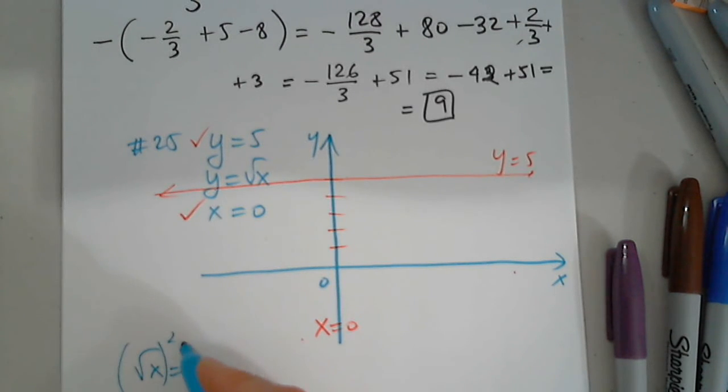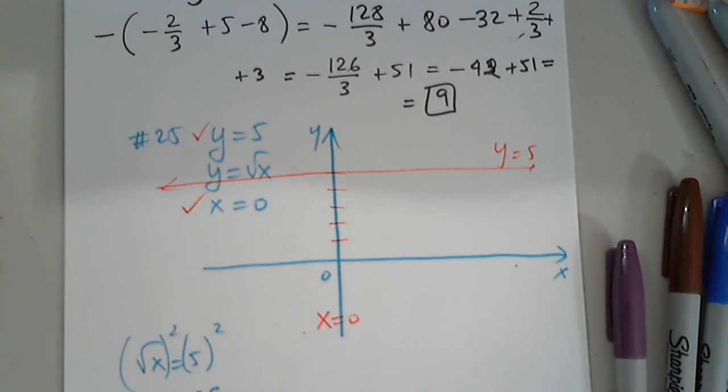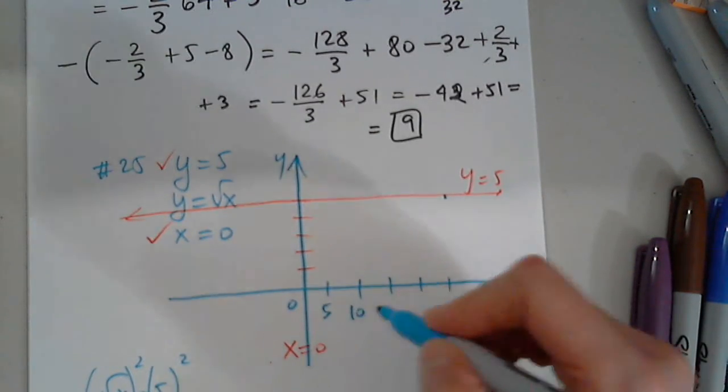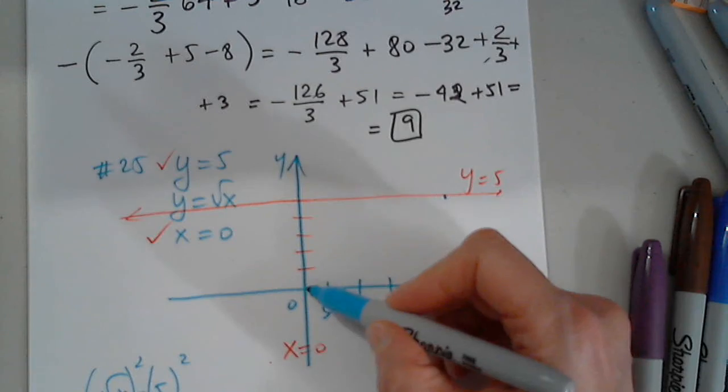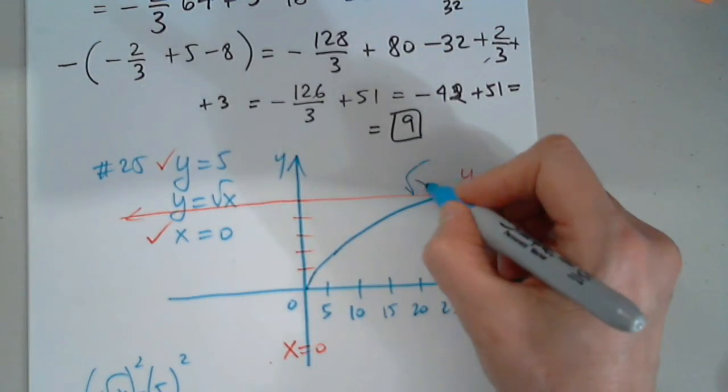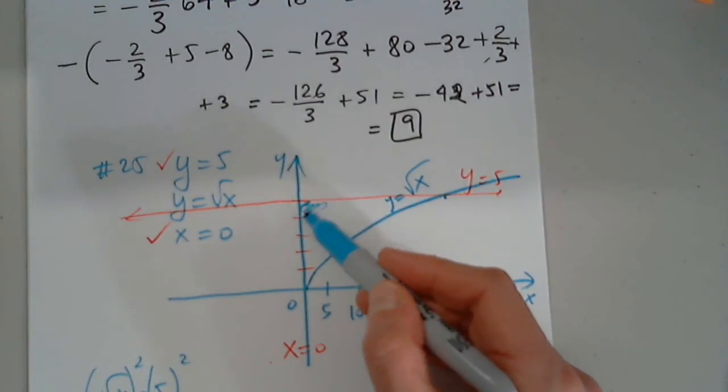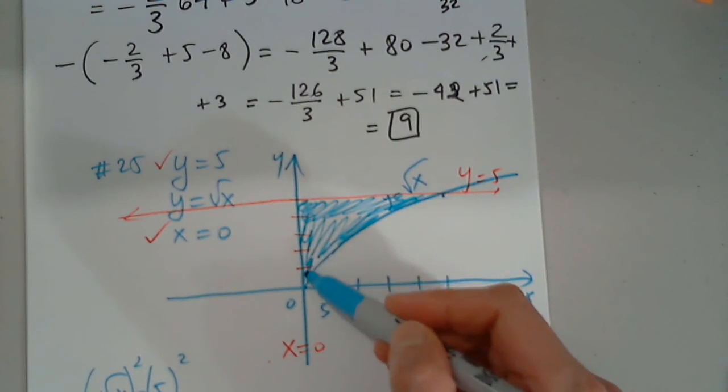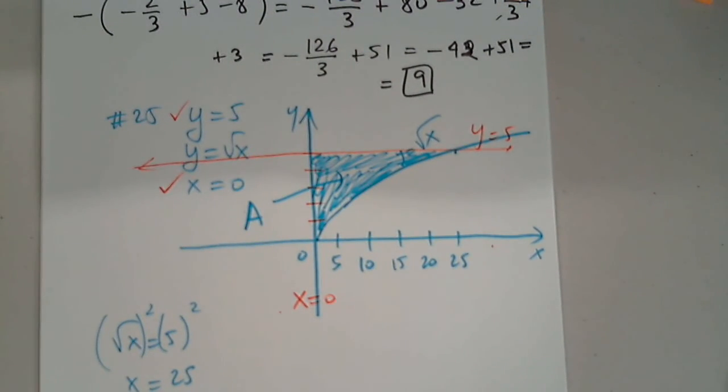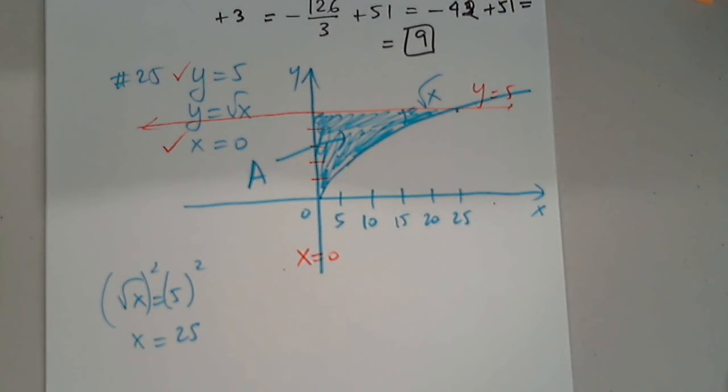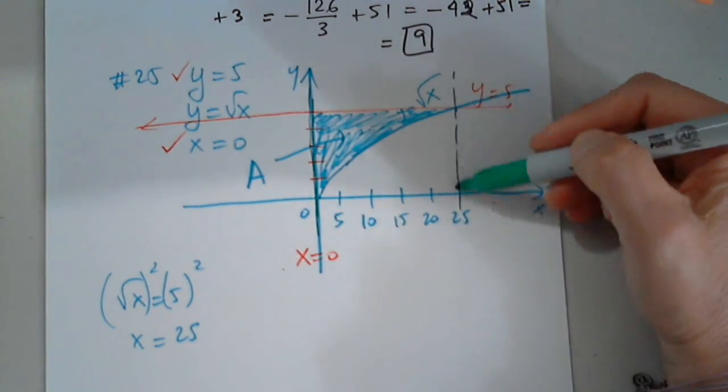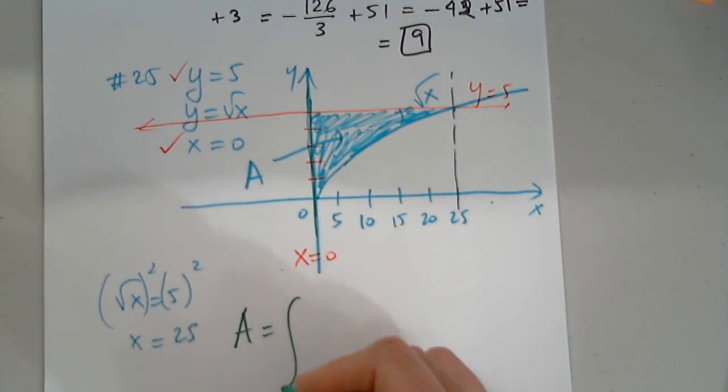So the square root of X equals 5. When I square both sides, I have to do that. I get X equals 25. So 5, 10, 15, 20, 25. And here is the graph. And this is the graph of the square root of X. So obviously, this is the area that we are asked to determine. I could have not chosen a better problem. Thank you. It's perfect for what we are trying to do first.